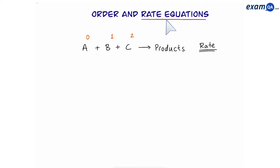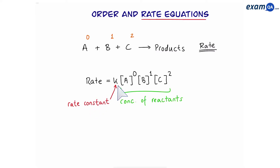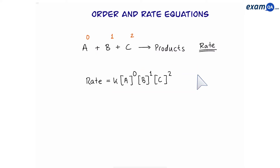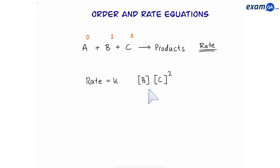Let's look at rate equations. To write a rate equation, we write: rate equals k, which is a rate constant, times by the concentration of the reactants to the power of their orders. Now we simplify this: A to the power of zero is one — anything to the power of zero is one — so we can get rid of that. Also, if something is to the power of one, you don't have to write the one. That means our final rate equation for the reaction above is rate = k[B][C]².